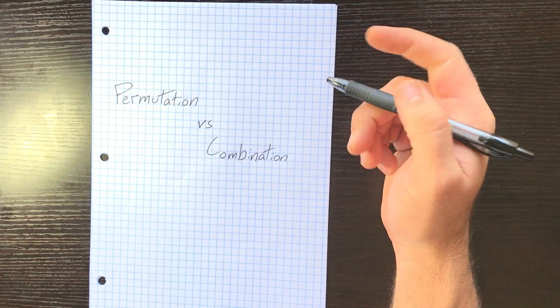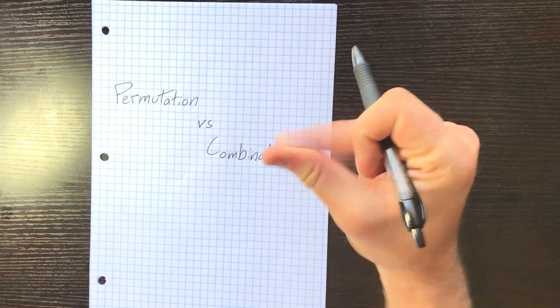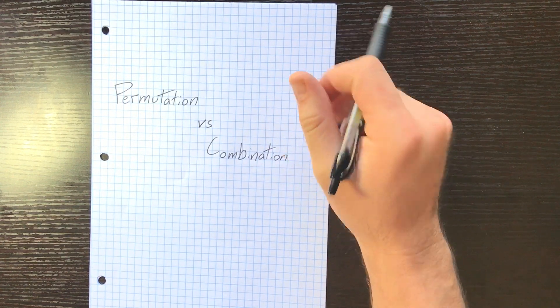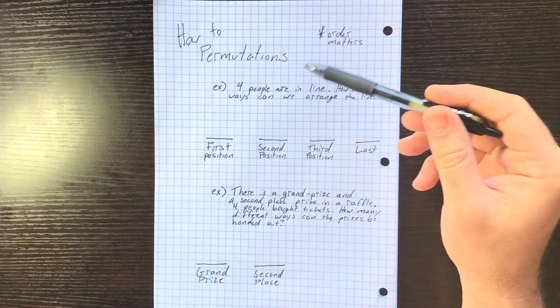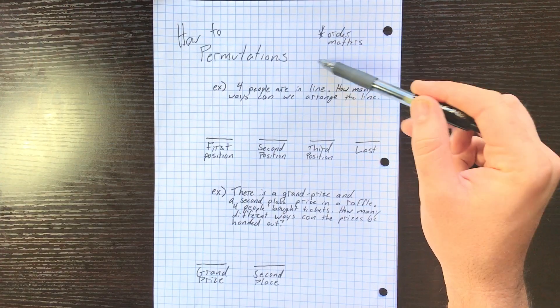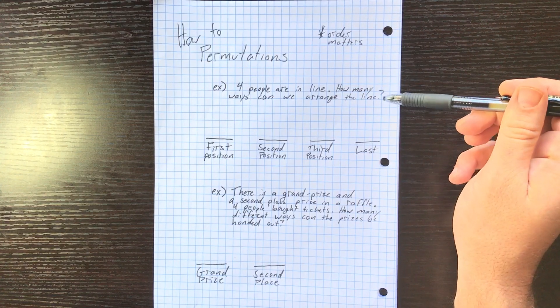Let's talk about permutations and combinations, the difference between these two, and how to reliably knock them out. I want to go over how to do permutations, and that's when the order matters.